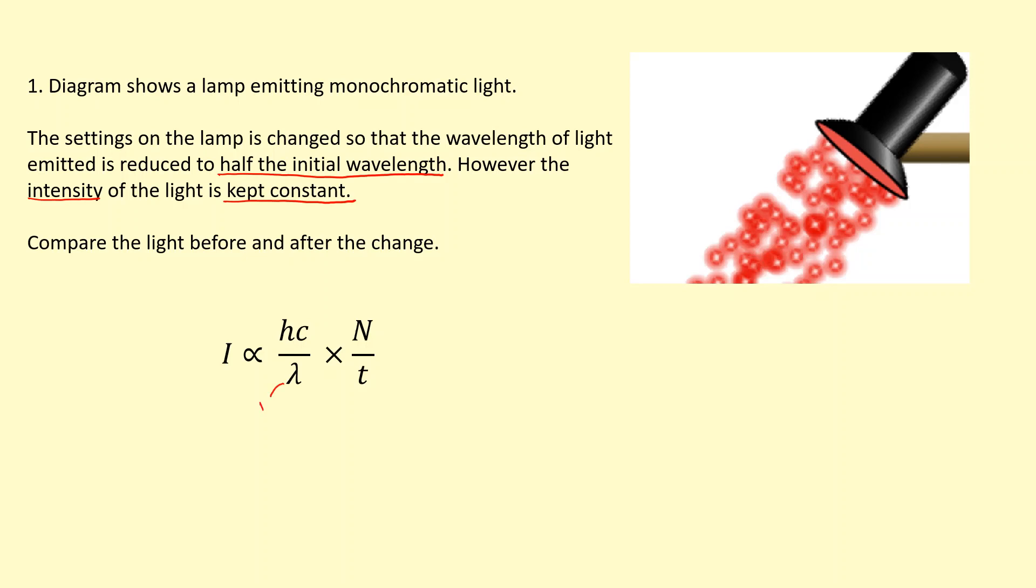So if we halve the wavelength here we're actually going to double the energy of each photon. We're going more towards the blue end of the spectrum. So the energy of the photon is going to actually times 2.